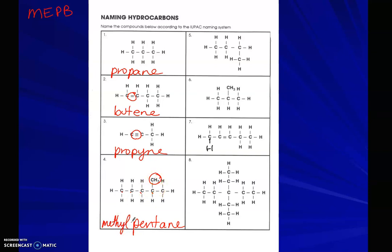Let's be very careful when we number them. Should we number 1, 2, 3, 4, 5 from the left, or 1, 2, 3, 4, 5 from the right? The lowest number carbon gets the substituent, so it's 2-methylpentane. Up here for number five, we have three carbons — but wait, just a little bit of a bend: this is actually a four-carbon chain.